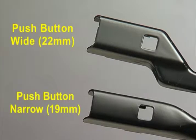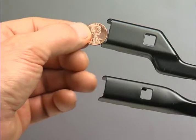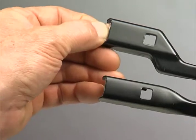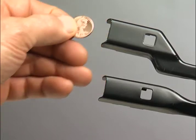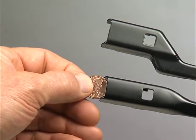Determine whether you have a wide or narrow push-button wiper arm by measuring it with a penny. A penny will fit snugly into the end of the wide 22-millimeter wiper arm. It will not fit into the end of the narrow 19-millimeter arm.